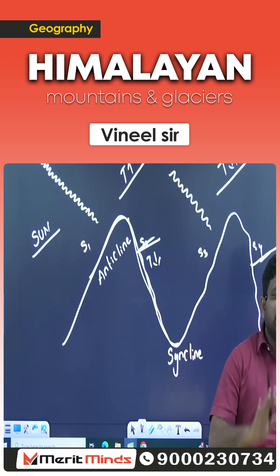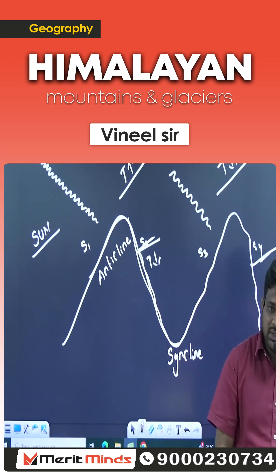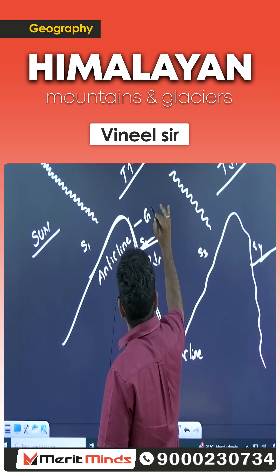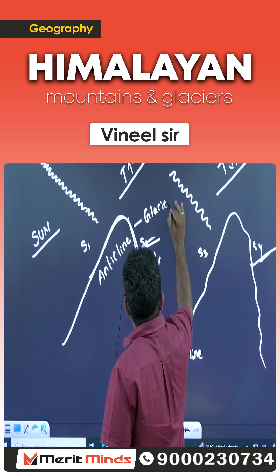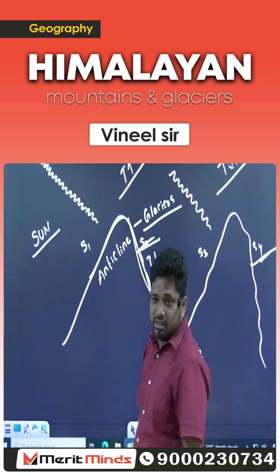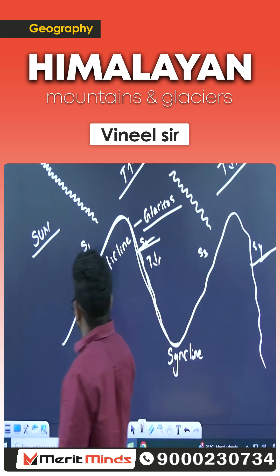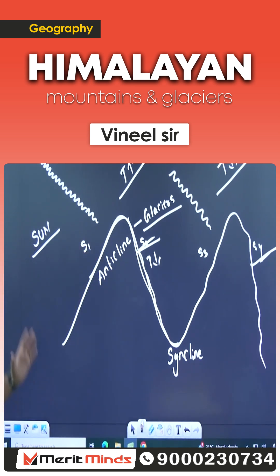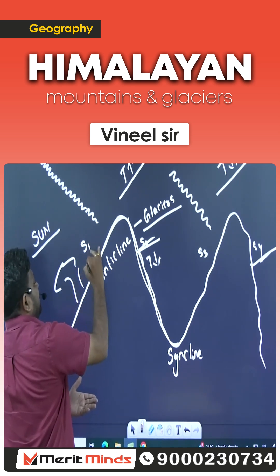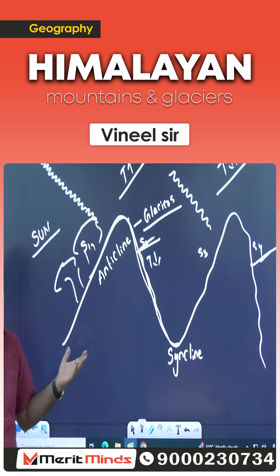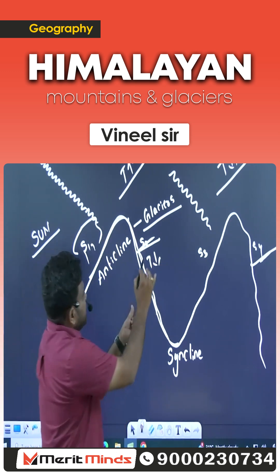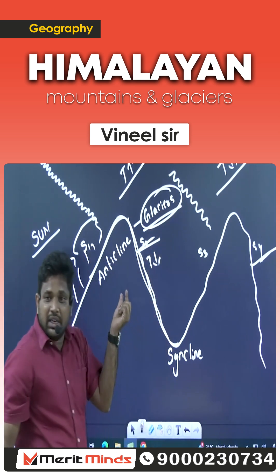Whenever you are looking at the Himalayan mountains, the northern side is completely dominated with glaciers. What about the southern side, which is exposed to sunlight? Whenever it is exposed to sunlight, you can find a thick forest area. But the other side is completely dominated with glaciers.